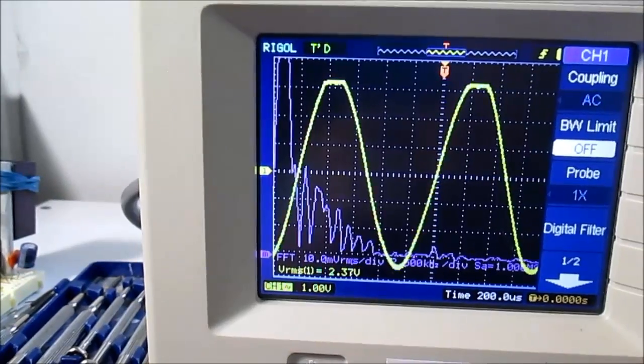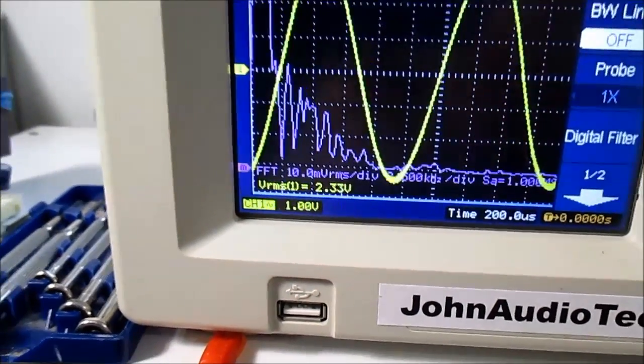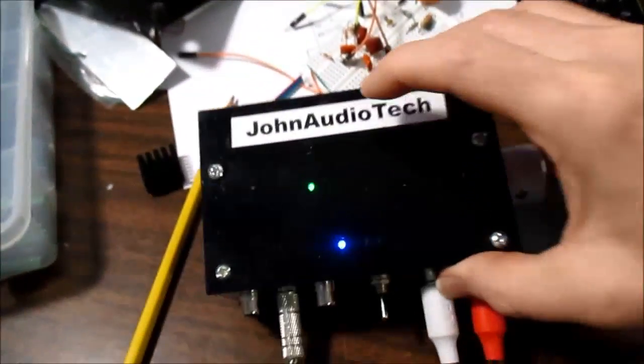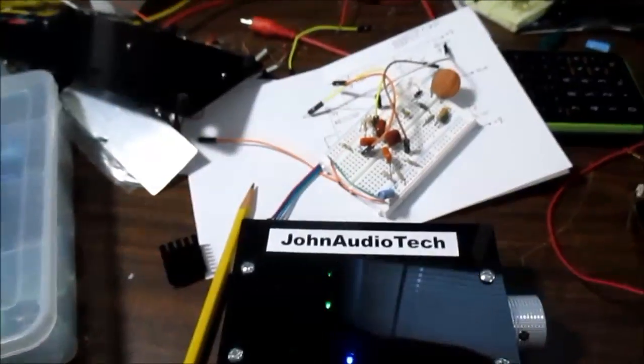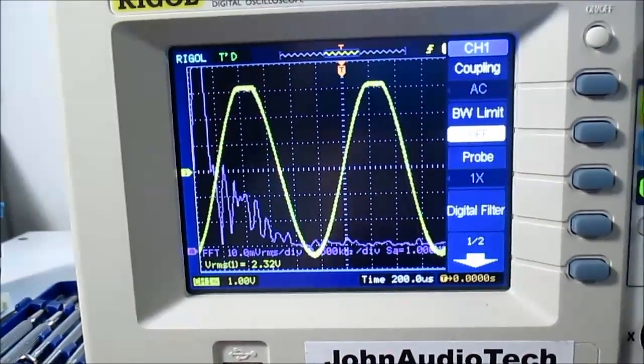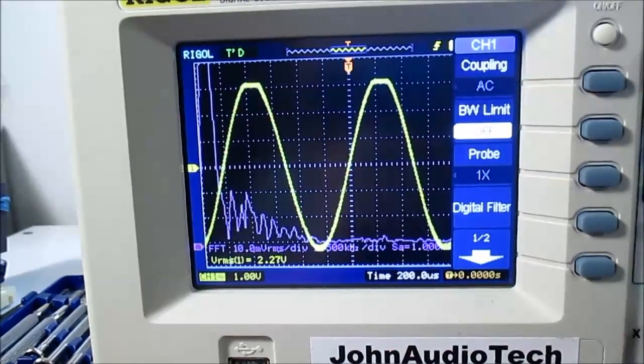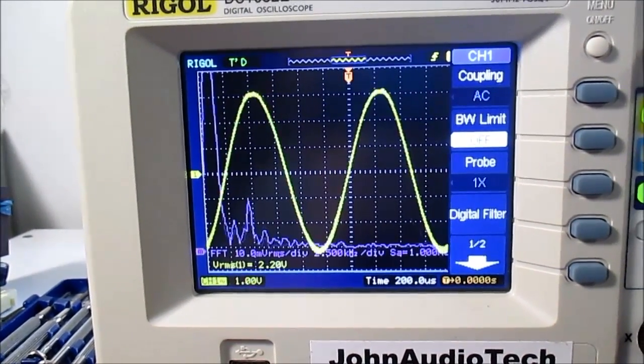It's the preamp that's clipping. And the reason it's doing that is because the battery on the positive rail is getting pretty low. So it's clipping first. So that is not the amplifier or the output stage itself doing that. That is just the preamp.